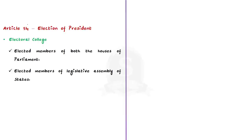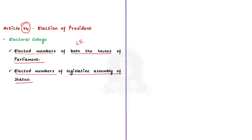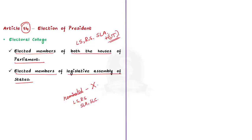The first one is Article 54, which deals with the election of President. It says that the President shall be elected by an Electoral College consisting of elected members of both the houses of the parliament and elected members of state legislative assembly. This includes elected members of Lok Sabha, elected members of legislative assemblies of states, and elected members of legislative assemblies of union territories which have a legislative assembly. Nominated members do not take part in the election process — this includes nominated members of both houses of parliament and nominated members of state legislative assembly and state legislative council.